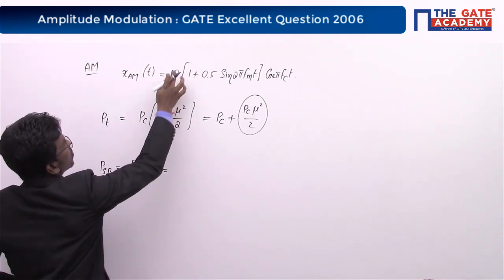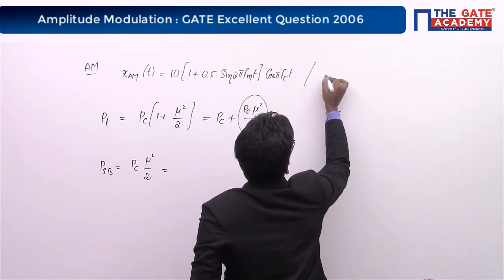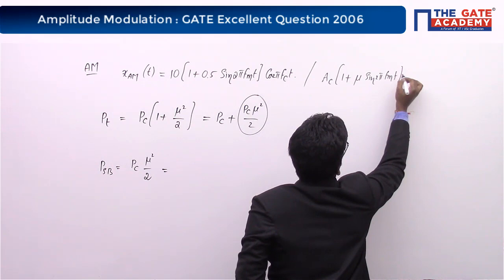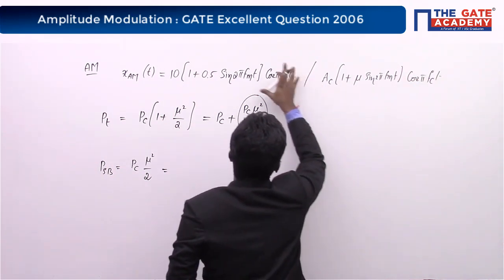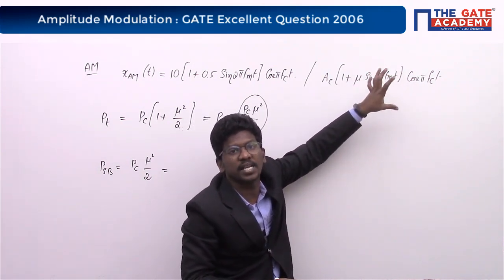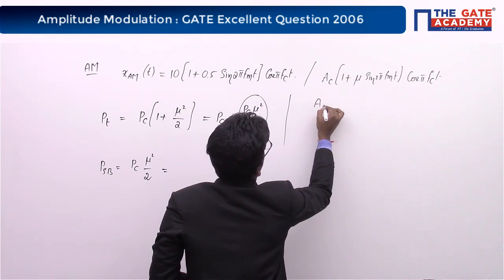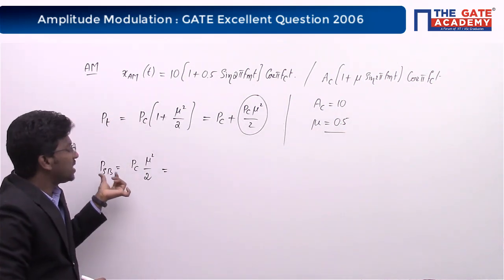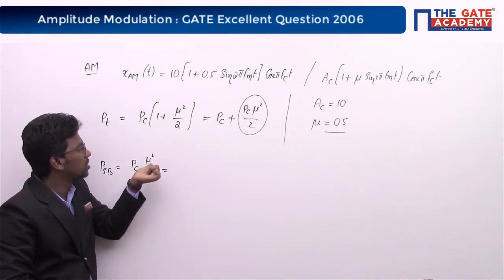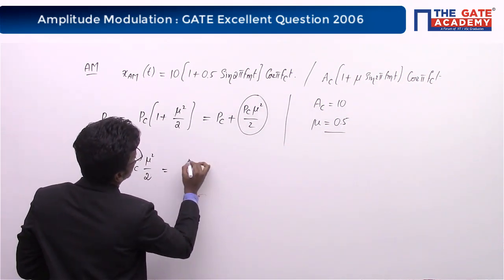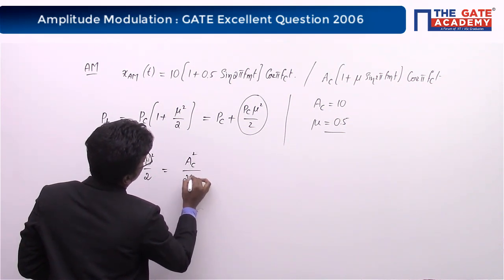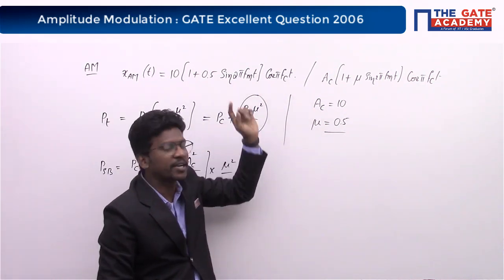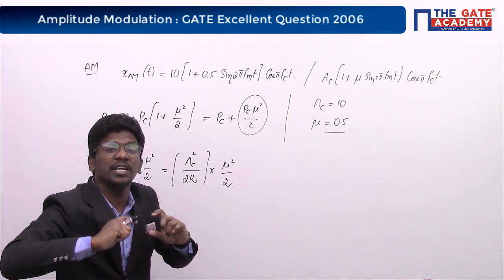To find P_c, we compare with the standard AM equation: A_c × (1 + μ sin(2π f_m t)) × cos(2π f_c t). Comparing with the given signal, we conclude A_c = 10 and modulation index μ = 0.5. The carrier power P_c = A_c² / (2R). However, the question does not mention any value of resistance R.